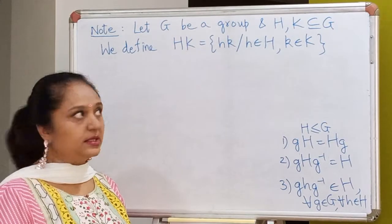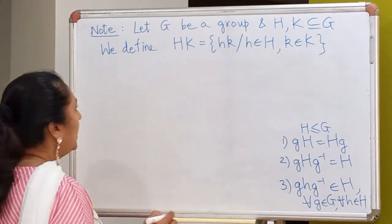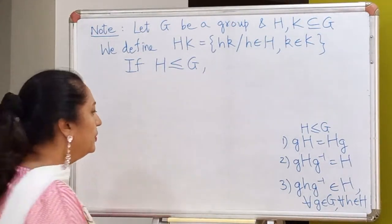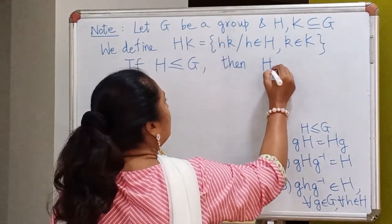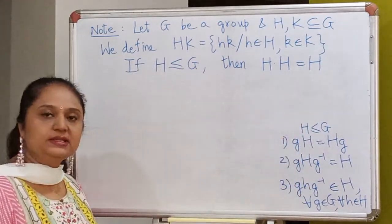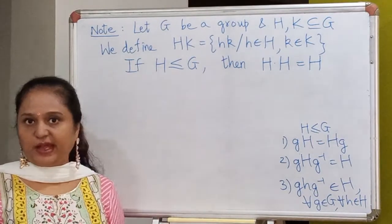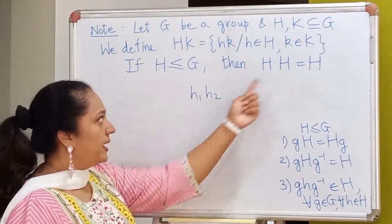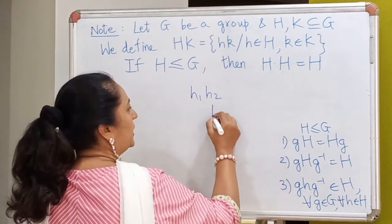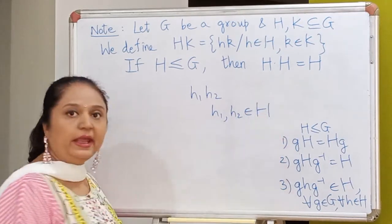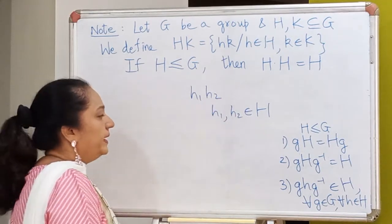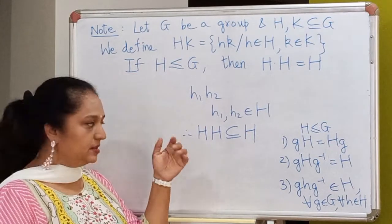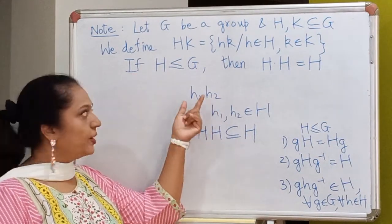We can define this set even if H and K are just subsets of G. However, if H happens to be a subgroup of G, then we can prove that this set will be the same as H. That is easy because any element on the left-hand side looks like a product of two elements, where the first element comes from H and the second also comes from H. Since H is a subgroup, by the closure property, this element will also lie inside H. So the left-hand side is a subset of the right-hand side.